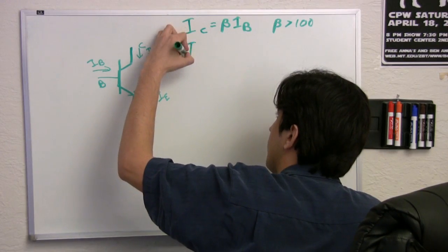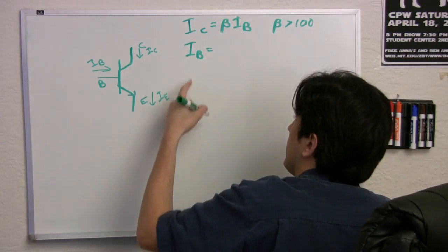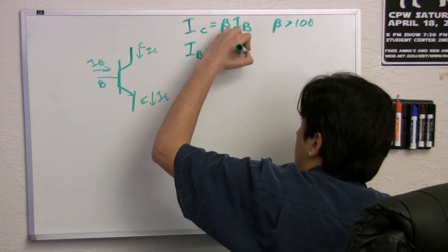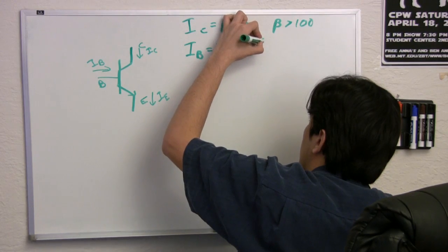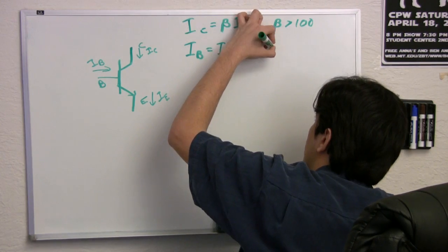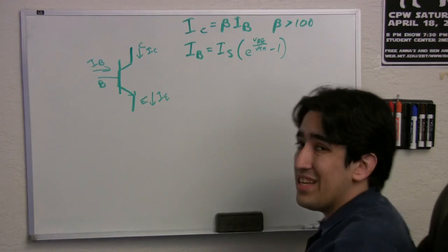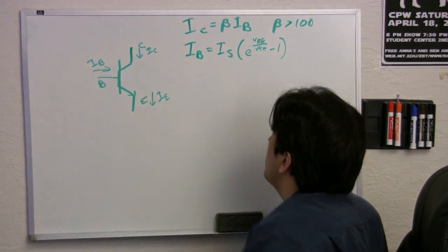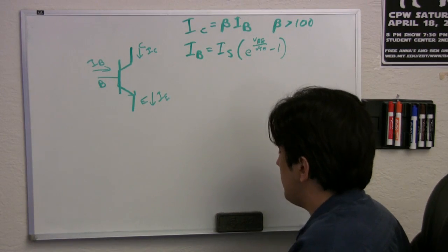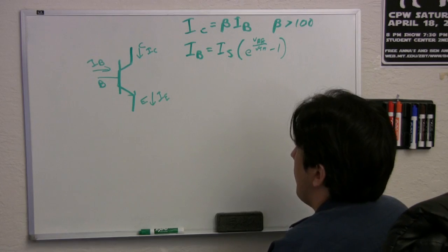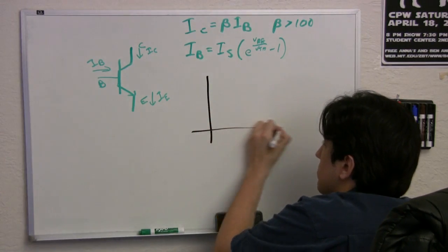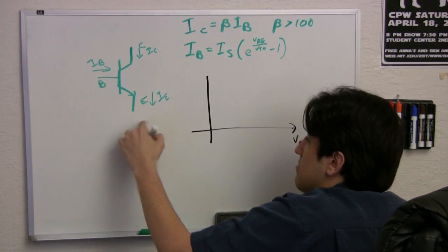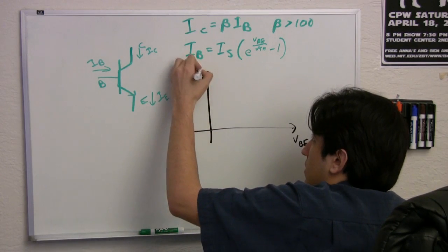Which basically means that the collector current is a lot more than the base current. There is also another equation that says that the base current is Is, some number, that's a constant, times e to the VBE over VTH minus 1. So, VBE is the voltage difference between the base and the emitter. Is is a constant, VTH is a constant. So, what does this tell us? This tells us that there's an exponential relationship between VBE, the voltage difference between the base and the emitter, and the current IB.